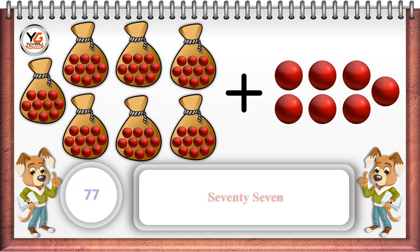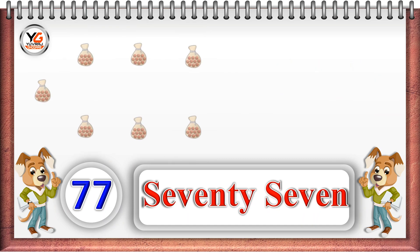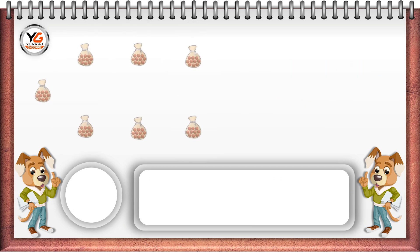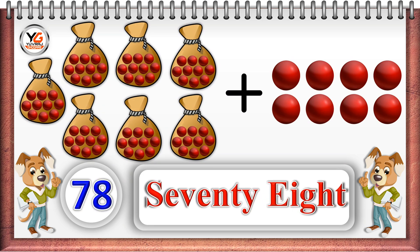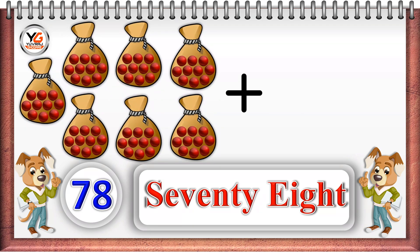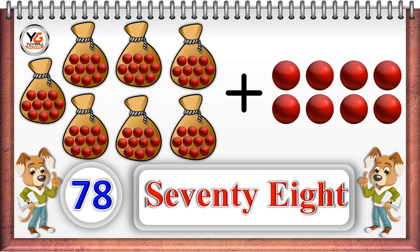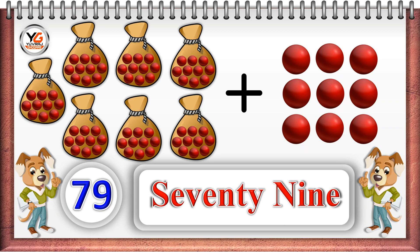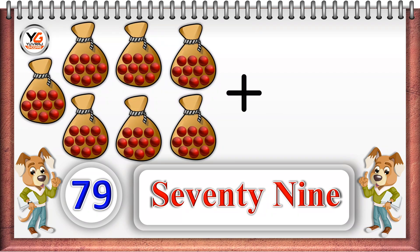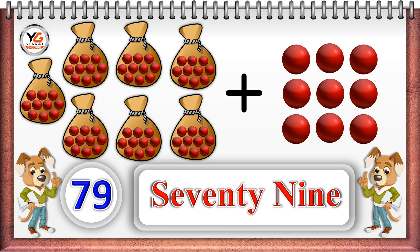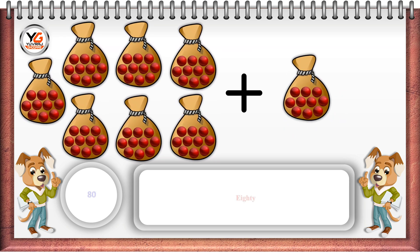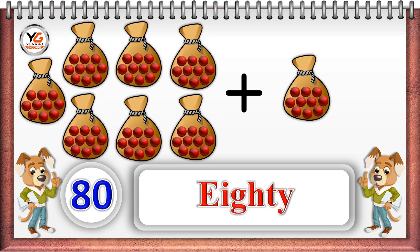Seven tenths and seven units: 77. Seven tenths and eight units: 78. Seven tenths and nine units: 79. Ten units means one 10: 8 10s: 80.